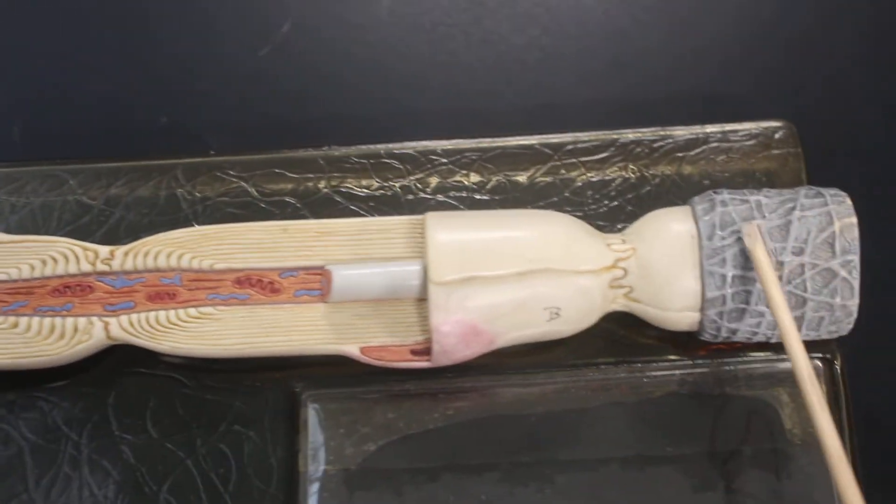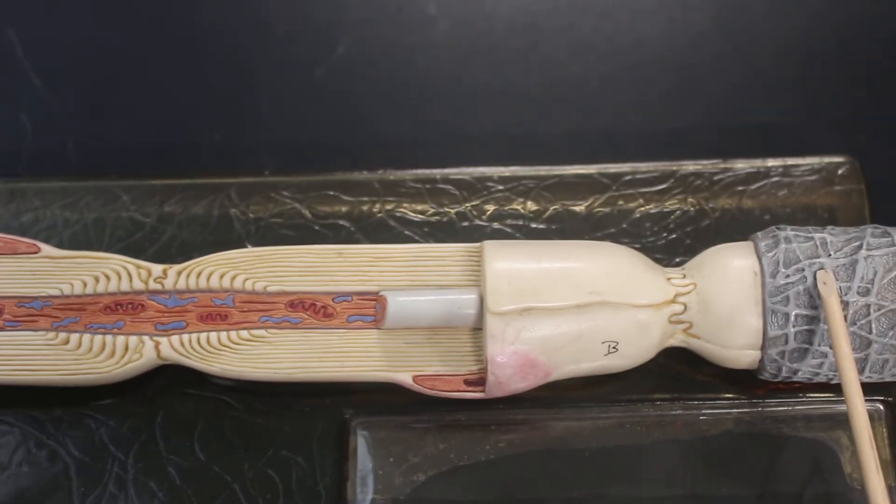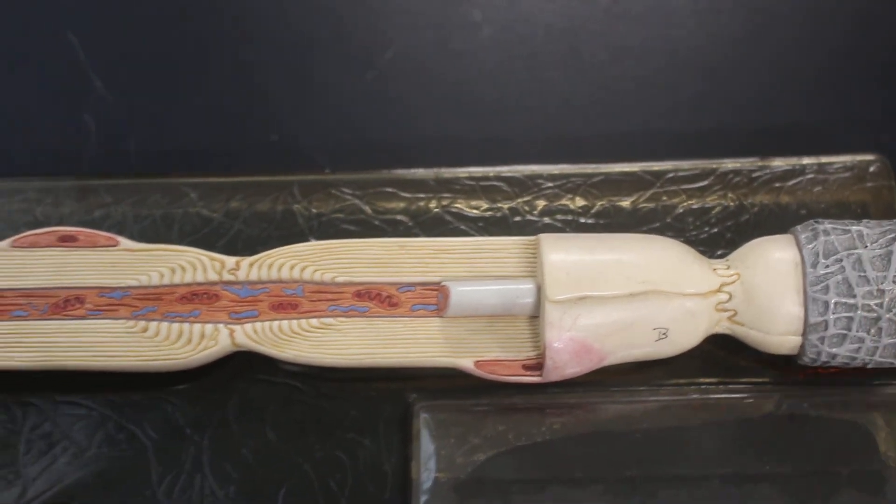And this here is the endoneurium, and that is it for the neuron model.